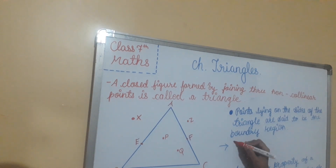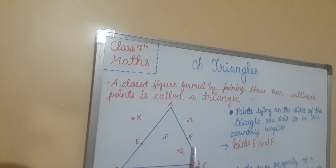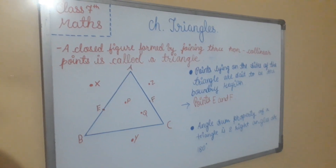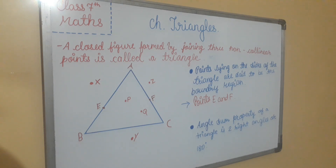Like points E and F, because they are on the boundary of the triangle. The angle sum property of a triangle is two right angles or 180 degrees. One right angle is equal to 90 degrees, so two right angles is equal to 180 degrees — directly, the angle sum property is 180 degrees.